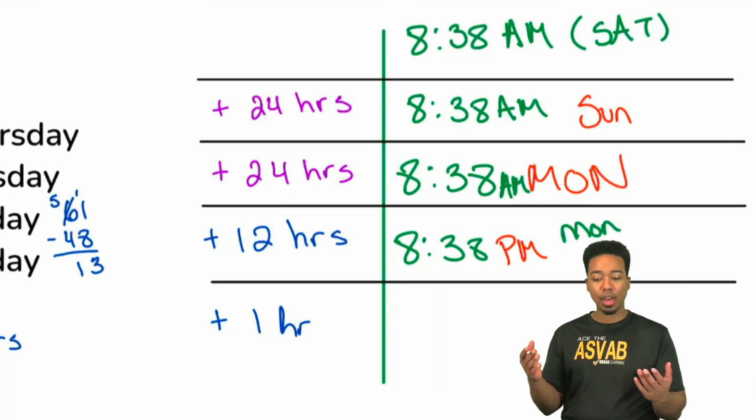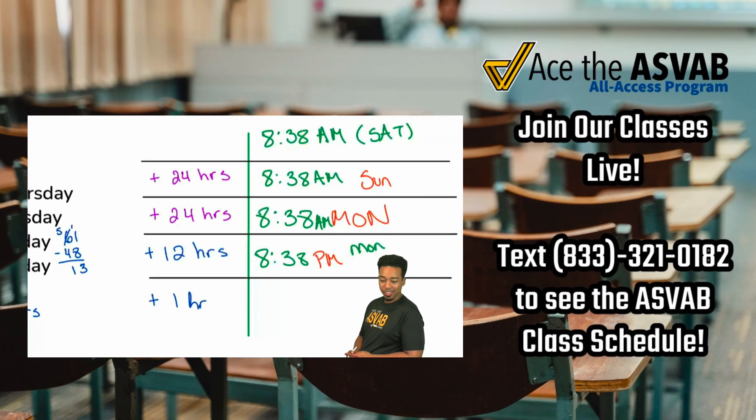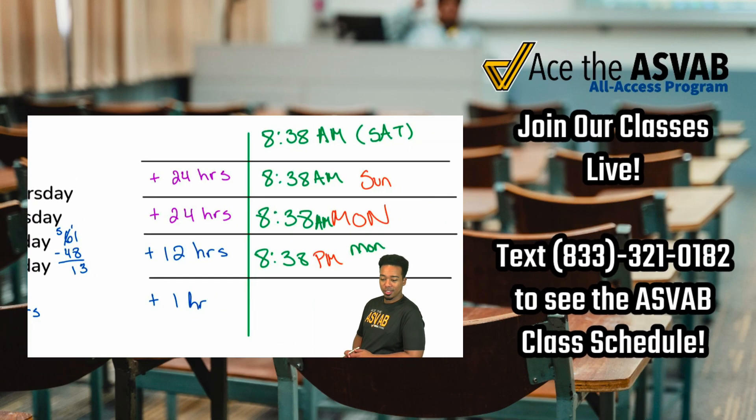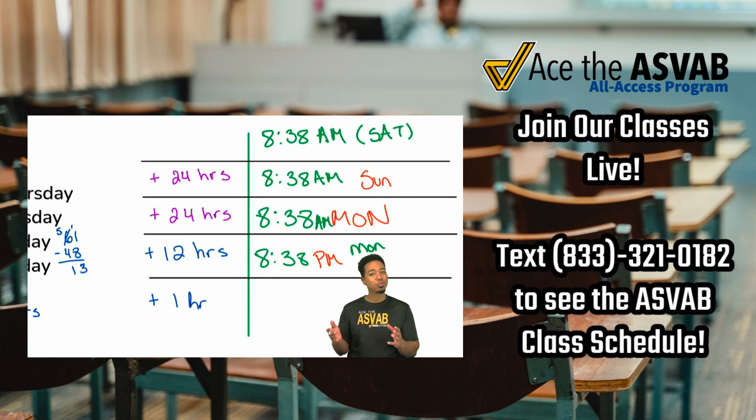Then if we just add one more hour, what's our final time? If we add one more hour, what's our final time? 9:38, be specific - 9:38 AM, PM, what day? We have 9:38 PM on Monday. That's right, and there we go.